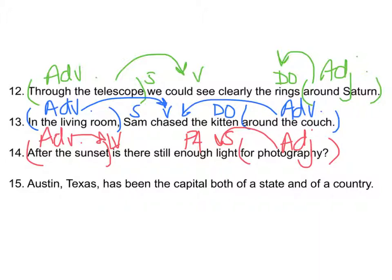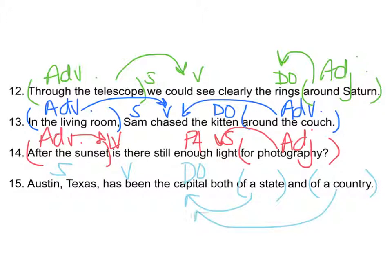'Austin, Texas has been the capital both of a state and of a country.' Those are two separate prepositional phrases. 'Has been' is the verb; Austin, Texas is the subject. Austin, Texas has been what? Capital — direct object. 'Of a state' and 'of a country' both modify 'capital,' which is a noun: they are both adjectival phrases. That was the entire page of your workbook, page 65 — all done!